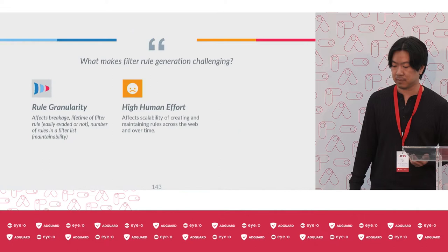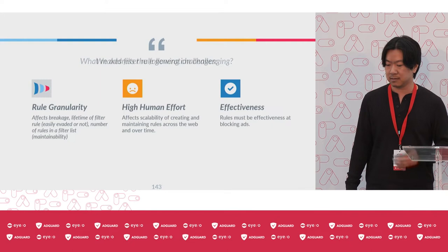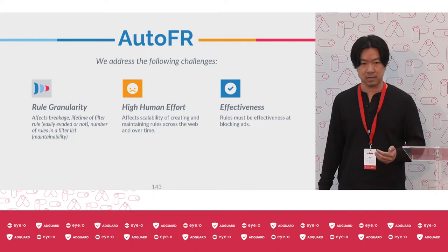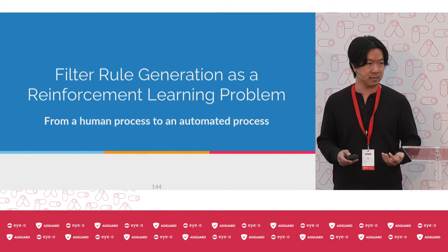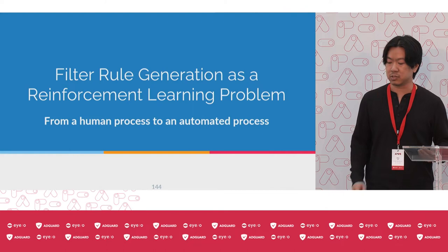The third challenge, which is implicitly implied, is that these rules have to be effective. Here we focus on rules that block ads. These two challenges — granularity and human effort — are exactly what AutoFR tries to address. Next, I'm going to explain how we formulate this problem of filter rule generation as a reinforcement learning problem, which allows us to convert this human process of creating rules to an automated process.